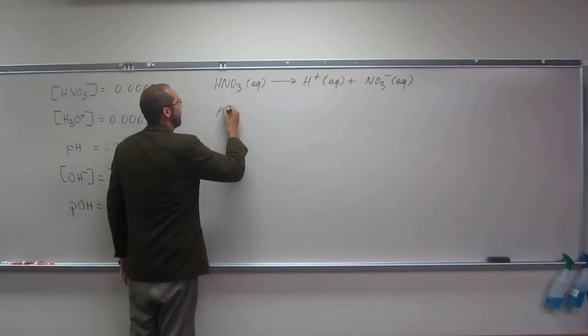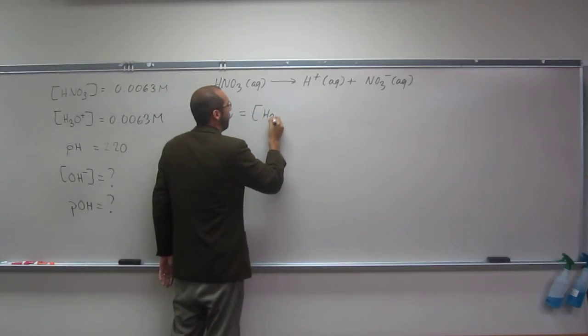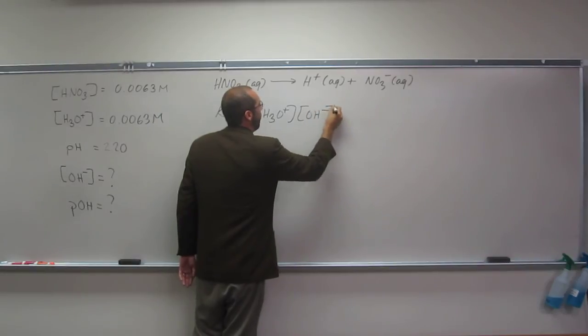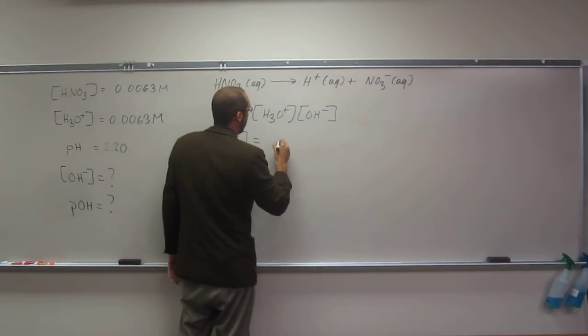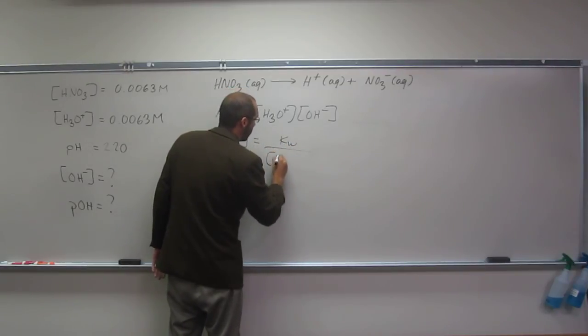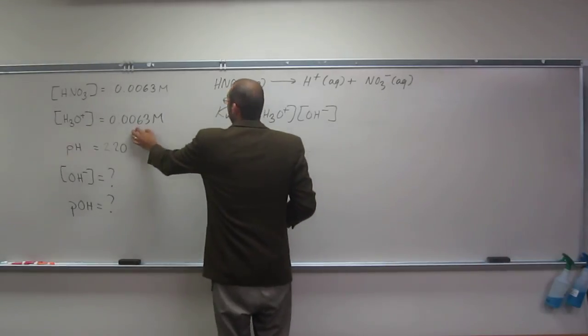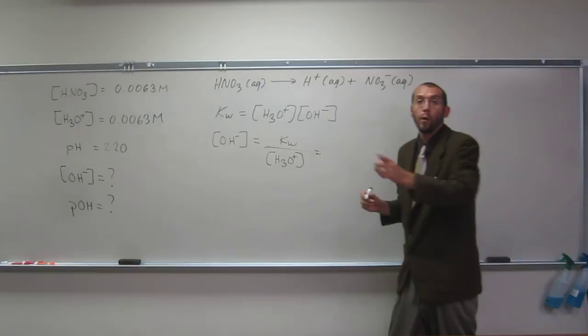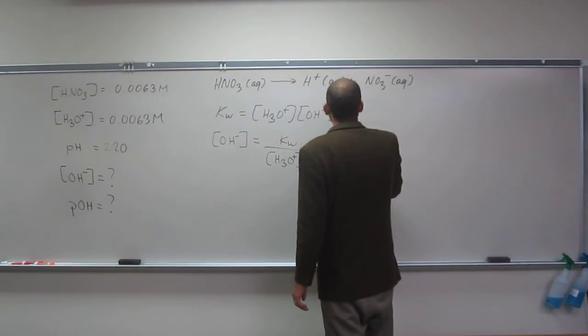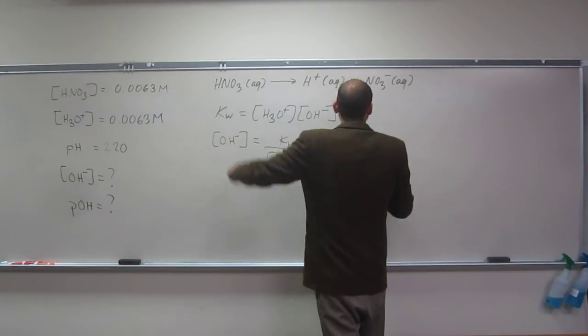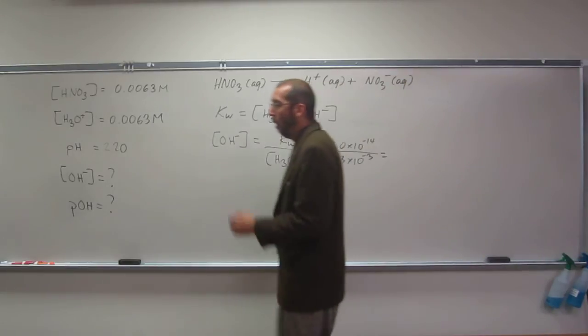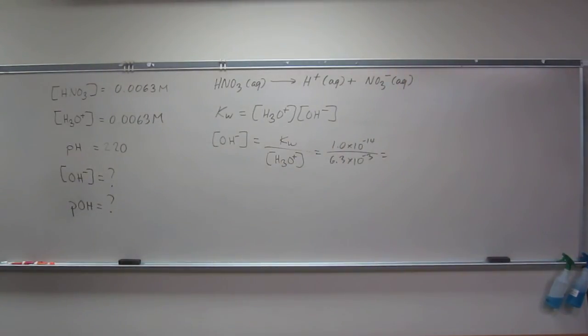So, do you guys remember what the KW expression was? KW equals? Yeah. So, we're looking for the hydroxide concentration. So, OH- equals KW divided by H3O+ concentration, which we got up here. So, remember KW is 1.0 times 10 to the negative 14th. 6.3 times 10 to the negative third.